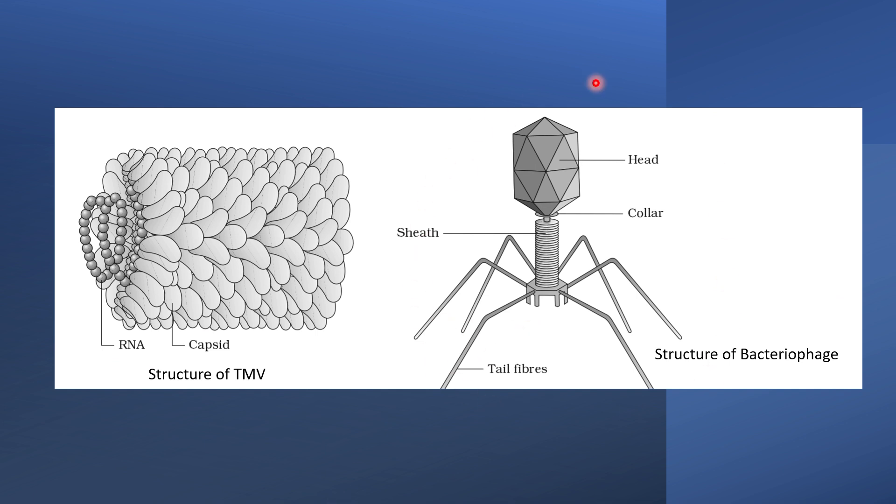First we will see the structure of bacteriophage. It has a tadpole-like structure, and this is the structure of TMV or the tobacco mosaic virus. It has single-stranded RNA helically coiled and it is naked, with an outer proteinaceous coat known as capsid. This small unit is known as capsomeres.